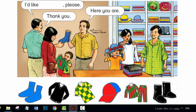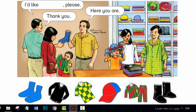Activity 2. Listen and say. What colour are the boots? Black. What colour are the pyjamas? Red and green. What colour are the socks? Blue. What colour is the hat? Blue and red. What colour is the sweater? Black. What colour is the shirt? Green and yellow.